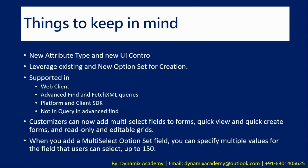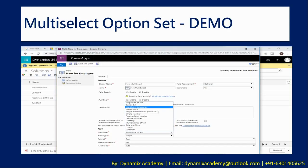When you add a multi-select option set field, you can specify multiple values for a field that users can select — up to 150 options. This screenshot shows how you can create one; the process is similar to creating any new field for an entity. A new data type called multi-select option set has been added, which you need to select in the data type field when defining your new field.